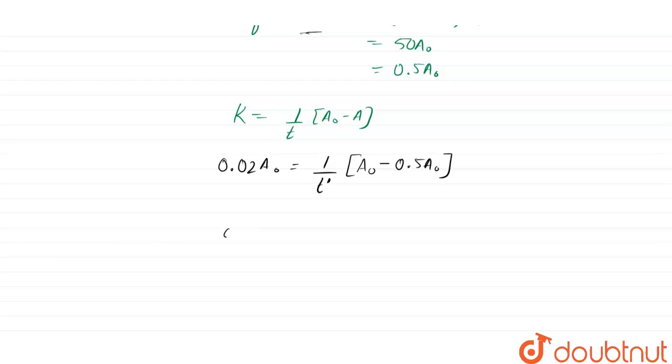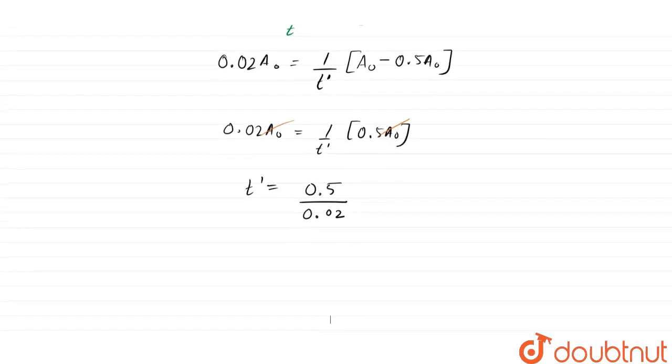This comes out to be 0.02 A₀ equals 1 by T dash times A₀ minus 0.5 A₀, which is 0.5 A₀. This A₀ will get cancelled and we will get T dash equals 0.5 by 0.02.